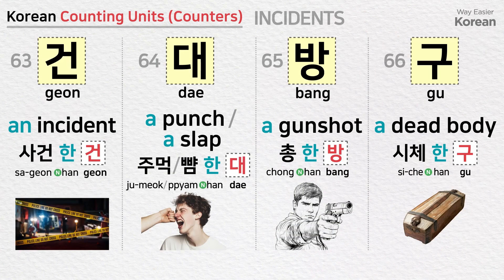건 is a counting unit for incidents: an incident — 사건 한 건. 대 is a counting unit for punches or slaps: a punch — 주먹 한 대; a slap — 뺨 한 대. 방 is a counting unit for gunshots: a gunshot — 총 한 방. 구 is a counting unit for dead bodies: a dead body — 시체 한 구.